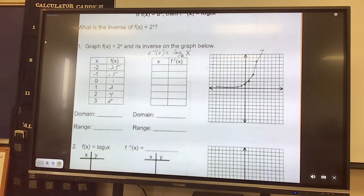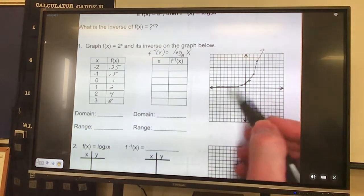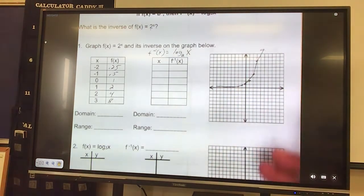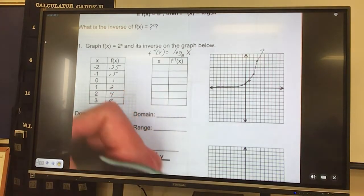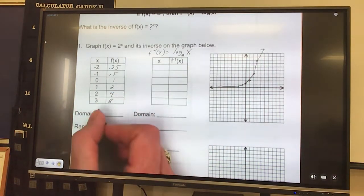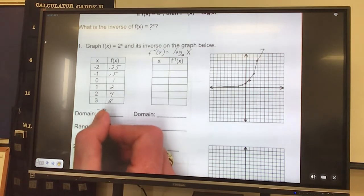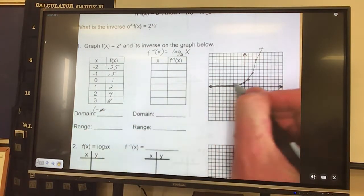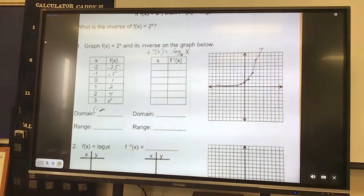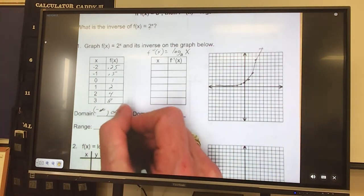Now we can answer our questions domain and range. Domain is how far left would this graph go? It would go forever to the left, so negative infinity, and beyond. And how far right it goes? Well it goes up but it also goes over to the right forever as well.